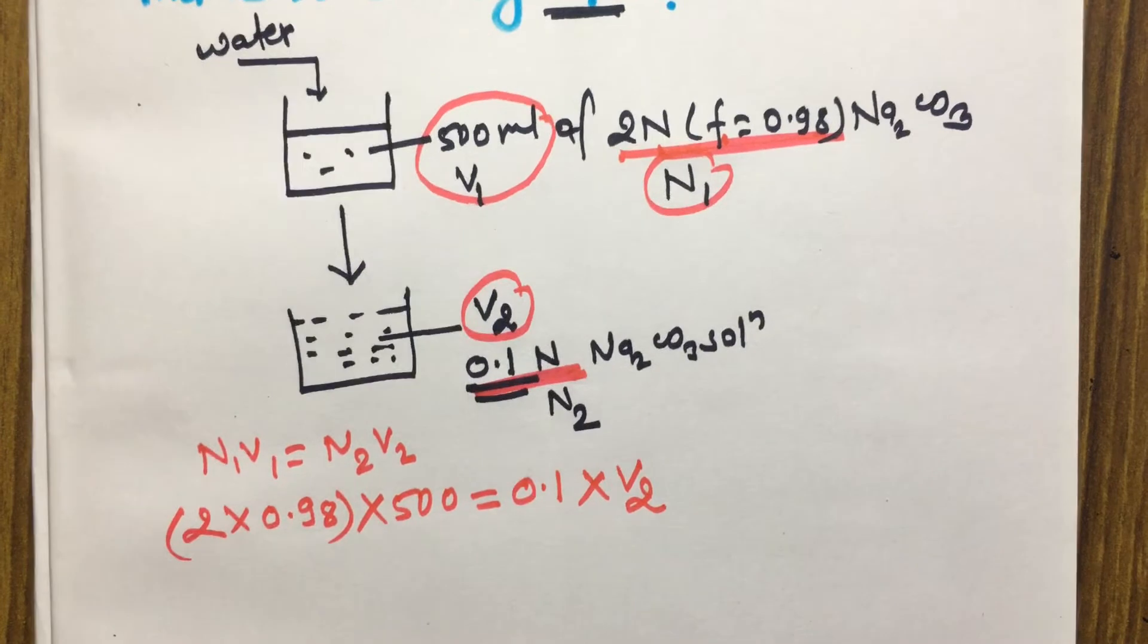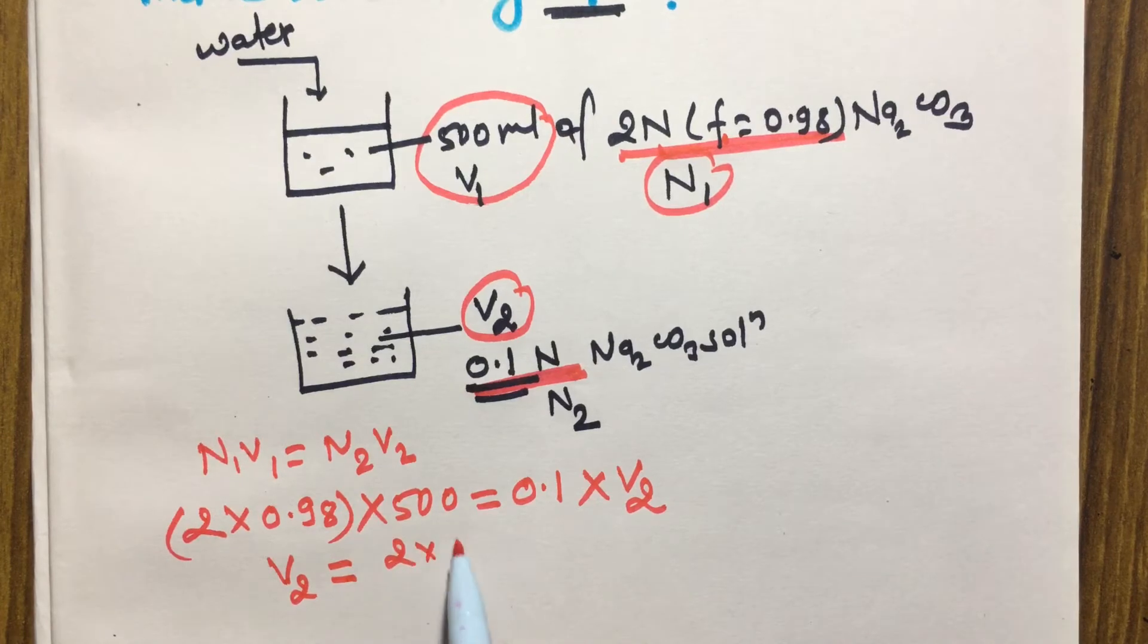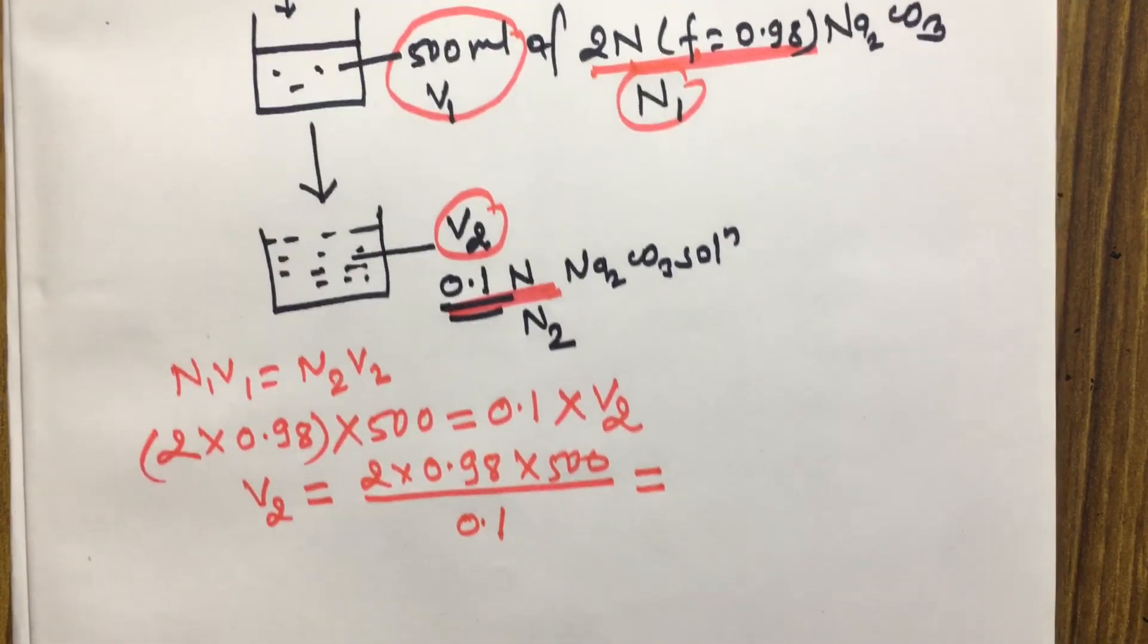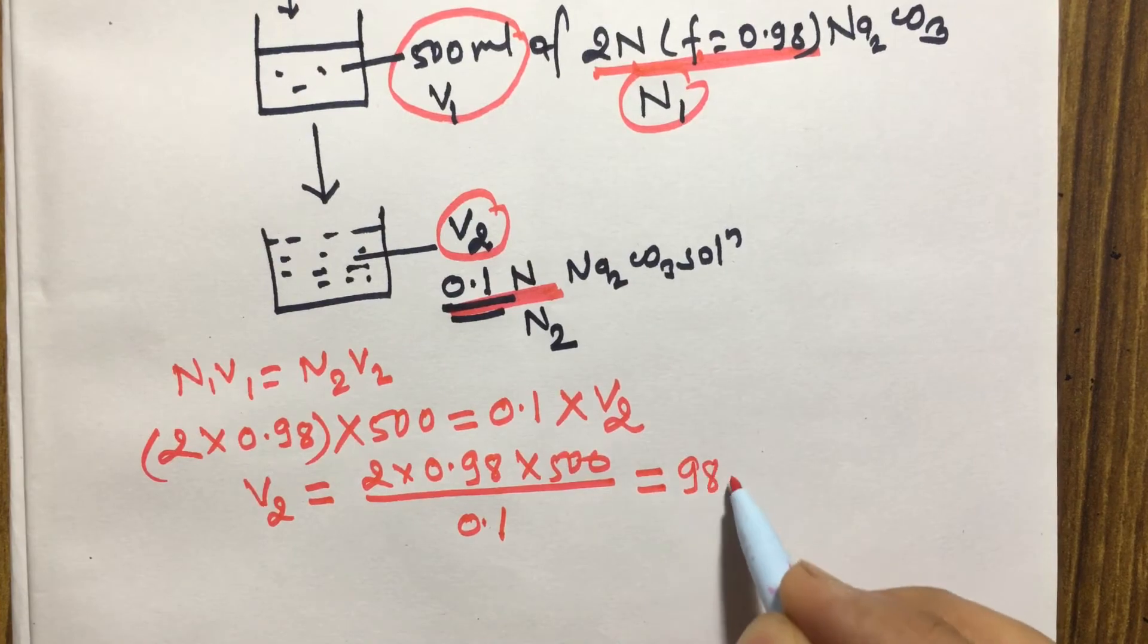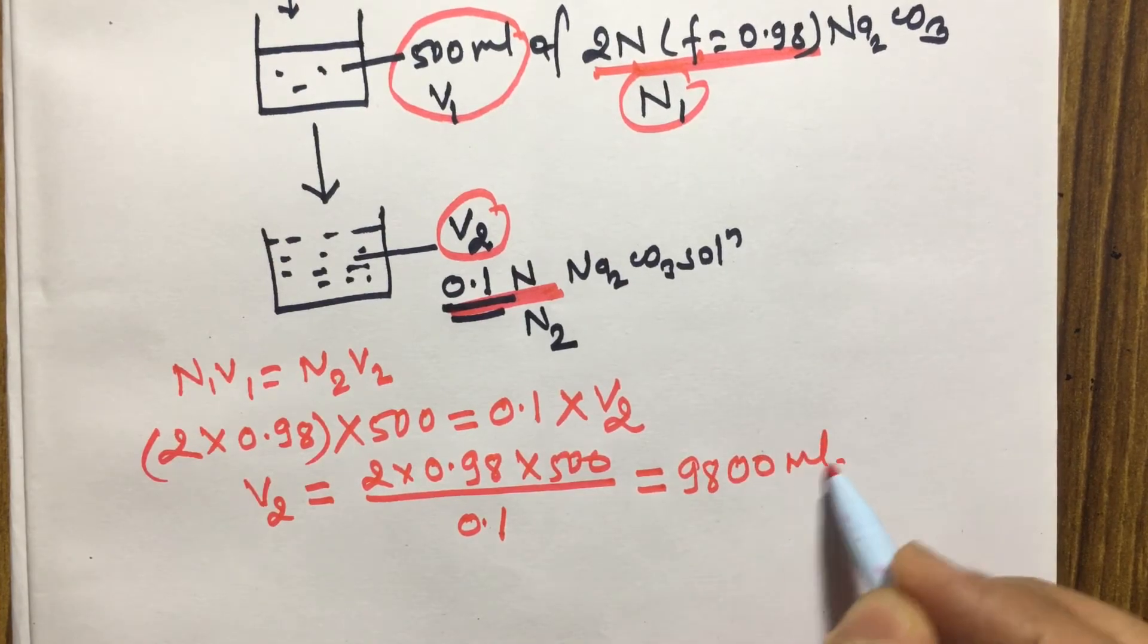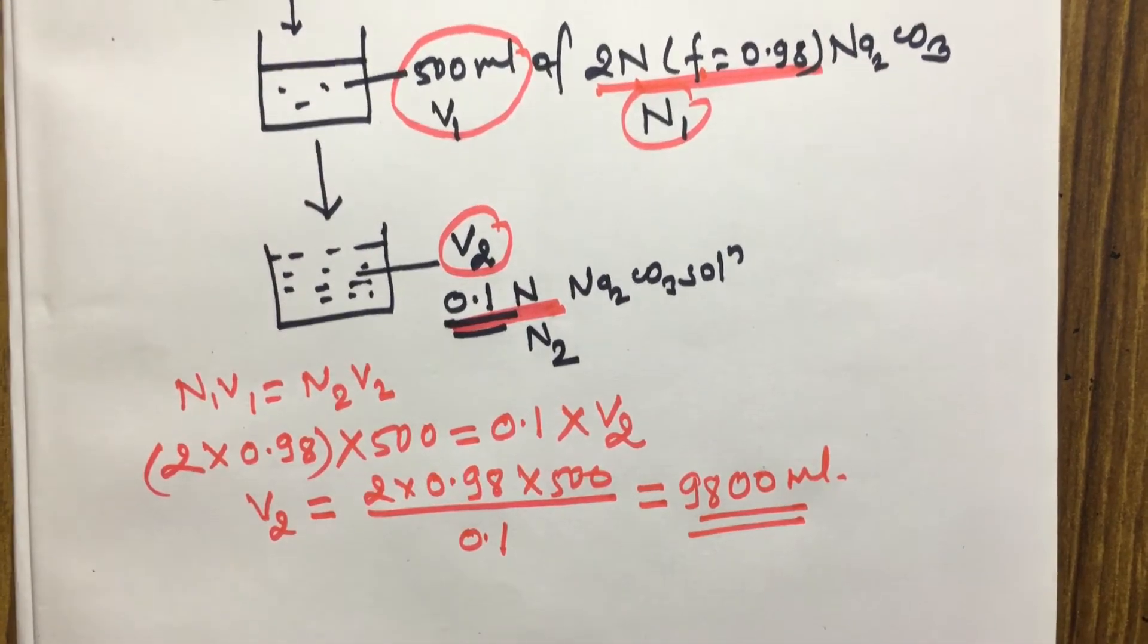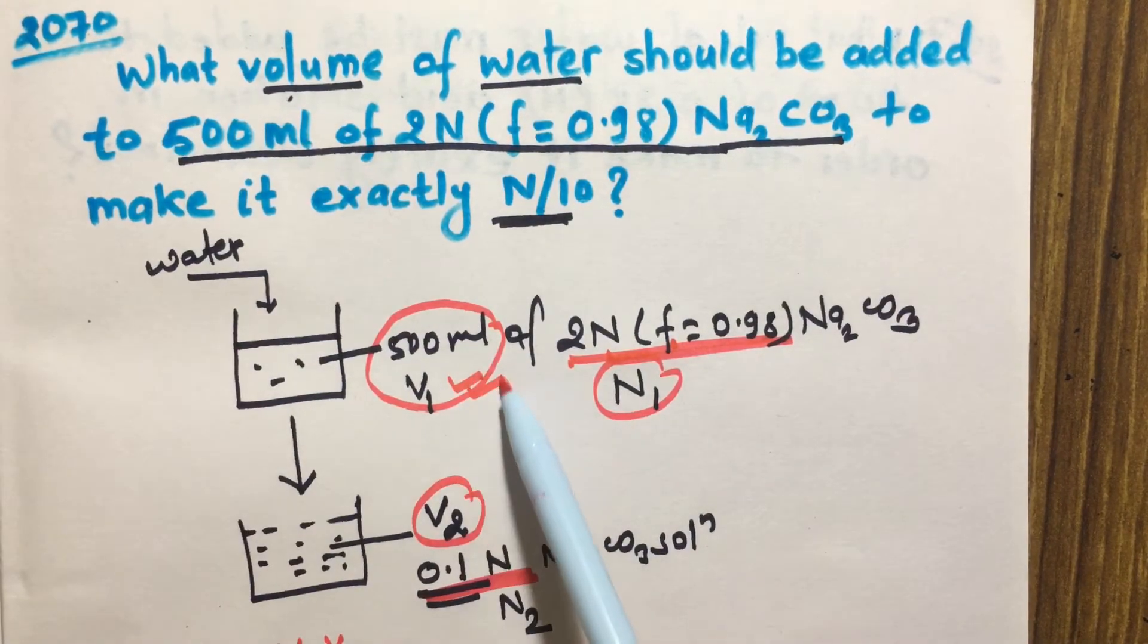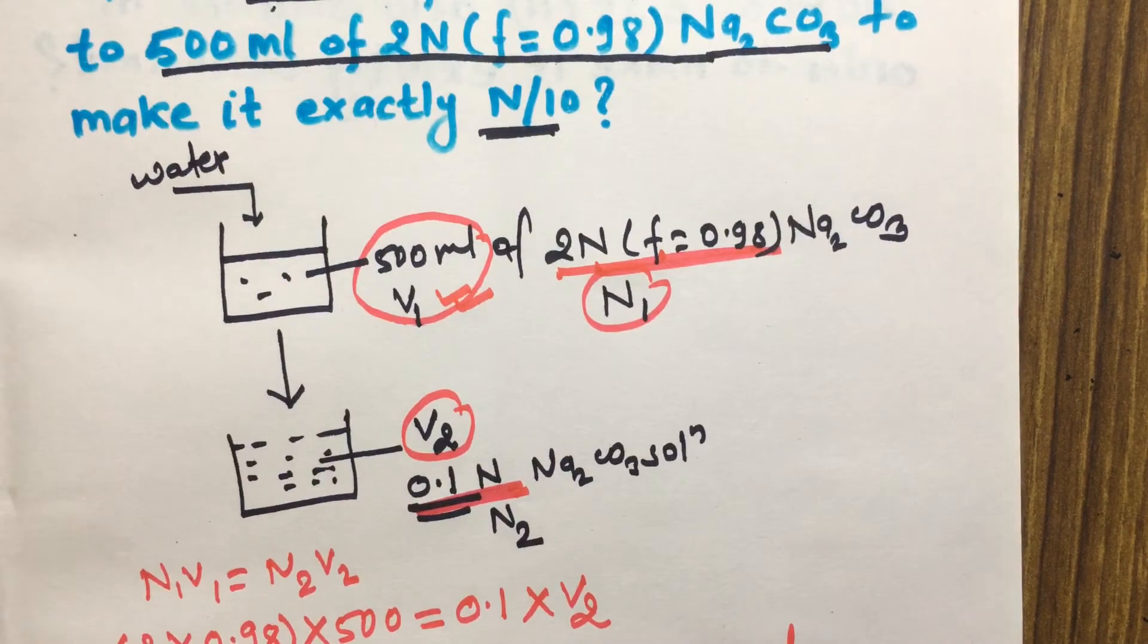After calculation, we get V₂ equals 2 × 0.98 × 500 divided by 0.1. So after calculation we will get 9800 ml.